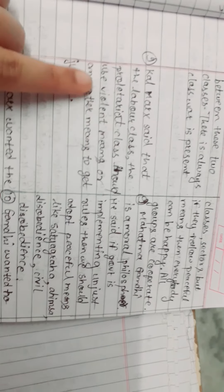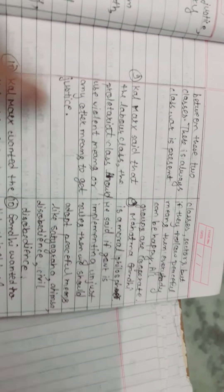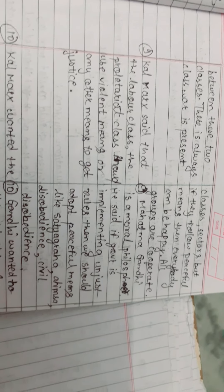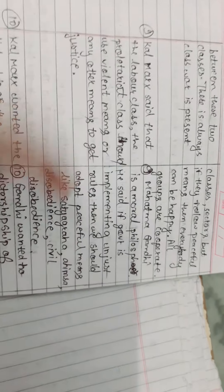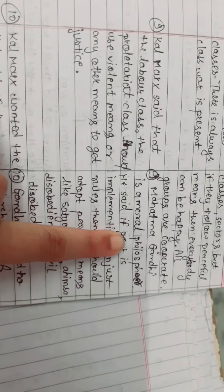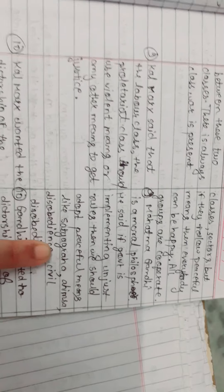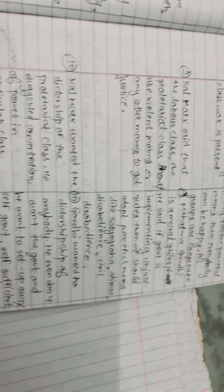Karl Marx said that the labor class, the proletariat class, should use violent ways or any other means to get justice. But Mahatma Gandhi, a moral philosopher, said that if government is implementing unjust rules, then we should adopt peaceful means like Satyagraha, ahimsa, disobedience, and civil disobedience.